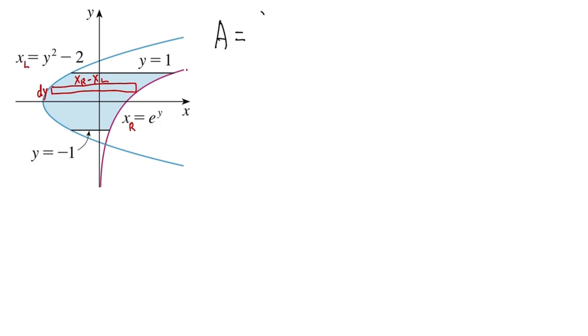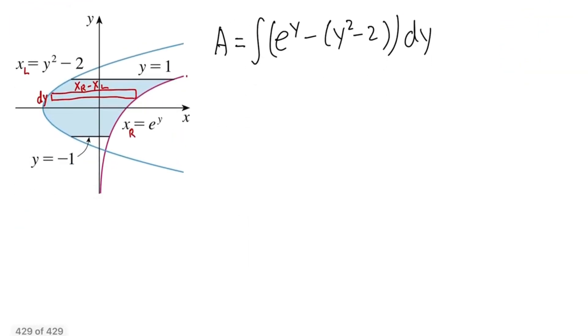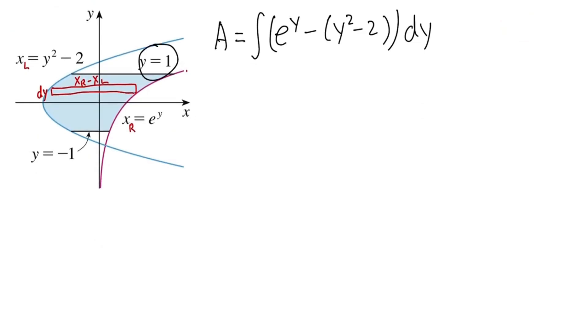Area equals integral. The function on the right is e to the y minus the function on the left, which is y squared minus 2. But it has two terms, so make sure you put down a parenthesis. And we are in the y world, because we have the dy here, right? Then be careful. We are in the y world, so pay attention to the y values. y goes from negative 1 to positive 1. And now let's just go ahead and integrate this, and we'll be done.